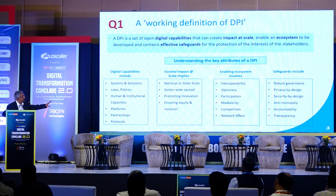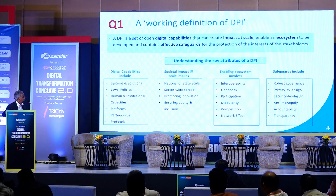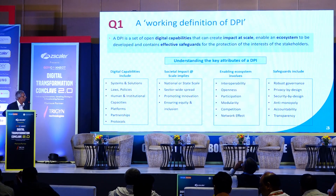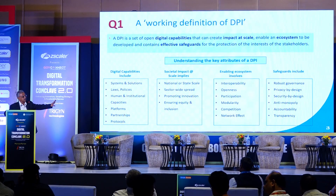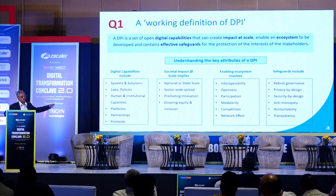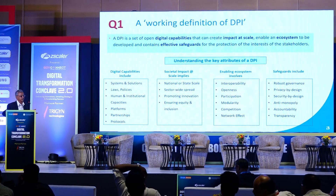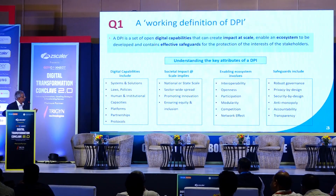I have given more detail here: what is meant by digital capabilities, what is the impact at scale, what is the enabling ecosystem that this DPI will empower, and what are the safeguards. I will not go into line-by-line detail, but it captures the most essential requirements and attributes of a DPI. The best-known example is Aadhaar and UPI in India. I had the privilege of being the chairman of Aadhaar for three years at a very critical time.